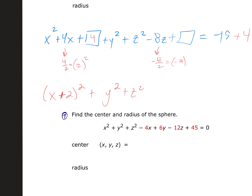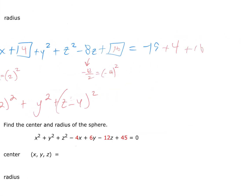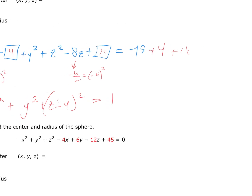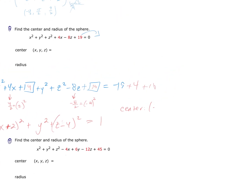For z: take the b-term −8 ÷ 2 = −4, so you get (z − 4)². Squaring −4 gives 16; add 16 to both sides. So the right side becomes −19 + 4 + 16 = 1. The equation is (x − 2)² + y² + (z − 4)² = 1.